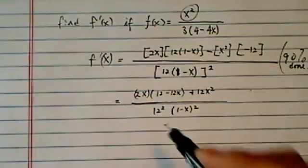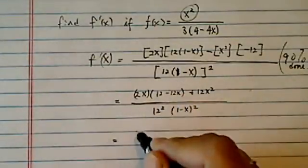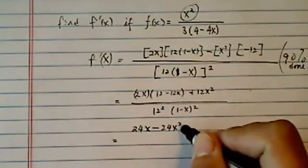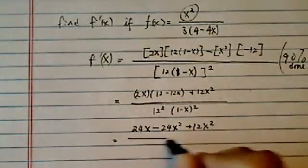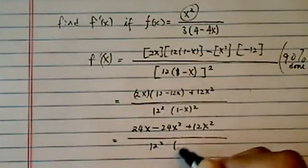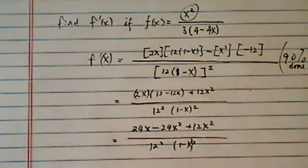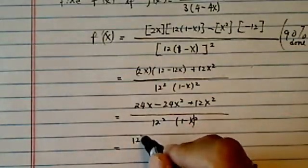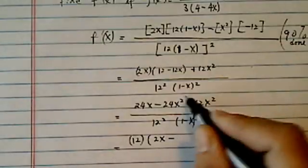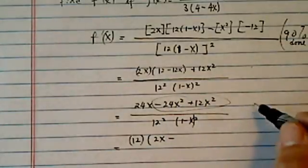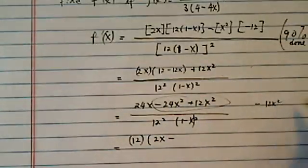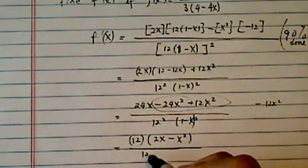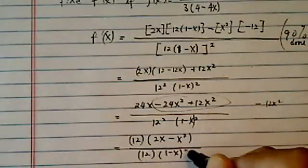So I want to just simplify and see what I have. I have a 24x minus 24x squared plus 12x squared, so I can cancel one. And I have a 12 squared, and I have a 1 minus x squared, and then 24 comes out in that I have a 12, and then there comes a 2x minus, now this term combined, I have a minus 12x squared. So I have minus x squared divided by 12, 1 minus x squared.